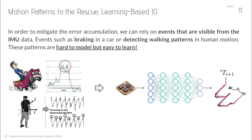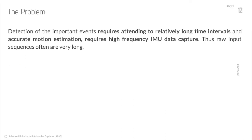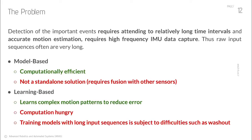In fact, the whole odometry problem can be cast as a sequence-to-sequence learning problem. For detecting such events, the input sequence to the model should be long enough to encapsulate them temporally. On the other hand, based on our domain knowledge of the IMU measurement model, for accurate integration and motion estimation, the integration step and therefore the IMU sampling frequency should be as high as possible. The combined effect is that input sequences need to be very long. Learning-based models for such long sequences are challenging to train and require lots of computation cycles per inference. As a result, we face a dilemma: model-based approaches are computationally efficient but not good standalone choices, while learning-based systems are compute-hungry and challenging to train on very long sequences.